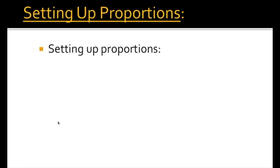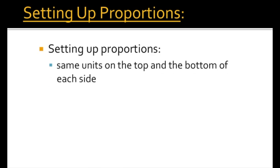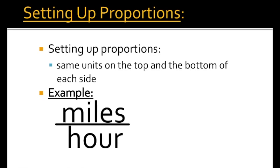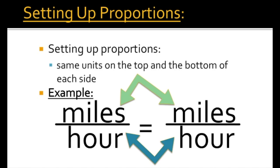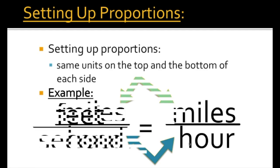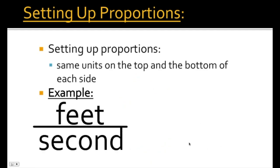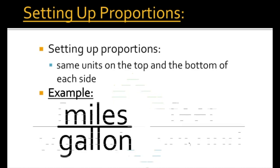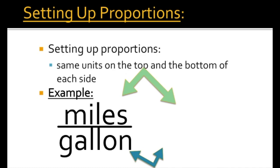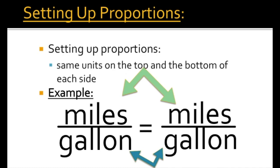Setting up proportions. When you're setting up proportions, you have to make sure that you have the same units on the top and the bottom of each side of the proportion. For example, if one side of the proportion has miles per hour, then the other side should also have miles per hour. Both have miles on top, both have hours on the bottom. If we have feet per second, the other side should also be feet per second. If we have miles per gallon, the other side should also have miles per gallon.